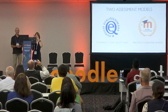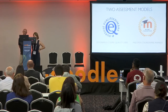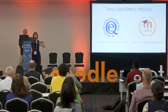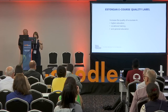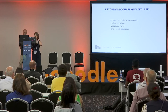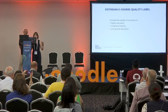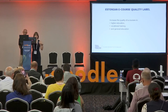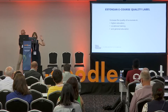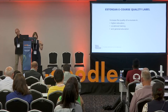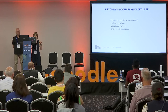The Estonian e-course quality label has an aim to increase the quality of e-courses in higher education, vocational training, and general education — that means everyone from every level can submit their course and we will evaluate them equally. Even if you have a 100% e-course at the doctoral level or a half e-course in high school, we evaluate them with the same matrix.